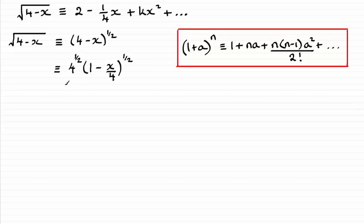Now, the square root of 4 is 2, so this is just going to be 2, and now we have got this bracket in the form 1 plus a to the power n, where a is minus x over 4 and the power n is a half. So, we just carry on expanding this now using this formula here. We've got 1 then plus n times a, so that's going to be the power a half and that's multiplied by a, a being the minus x over 4.